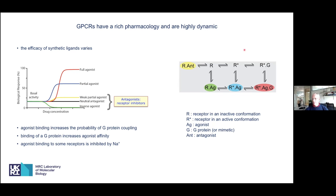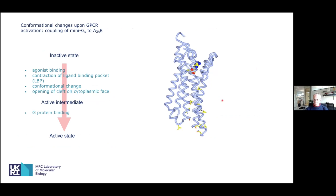Receptors undergo a number of conformational changes — the inactive state R can spontaneously transition into R*, so even in the absence of ligand a small proportion can form this active state. These states are stabilized by agonist binding. You can have agonist bound to an inactive state at low affinity, a high-affinity active state, and when the G protein binds you get even higher affinity. This equilibrium is going on the whole time even in detergent, so you have to be able to shut this down if you want to get structures.